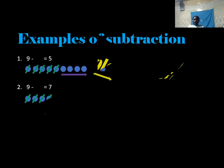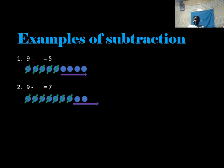Now examples of subtraction. We have nine take away an unknown number, and the answer is five. What are we supposed to do? Pupils, you count nine balls, then take away five: one, two, three, four, five. How many balls remaining? One, two, three, four. So nine take away four equals five.